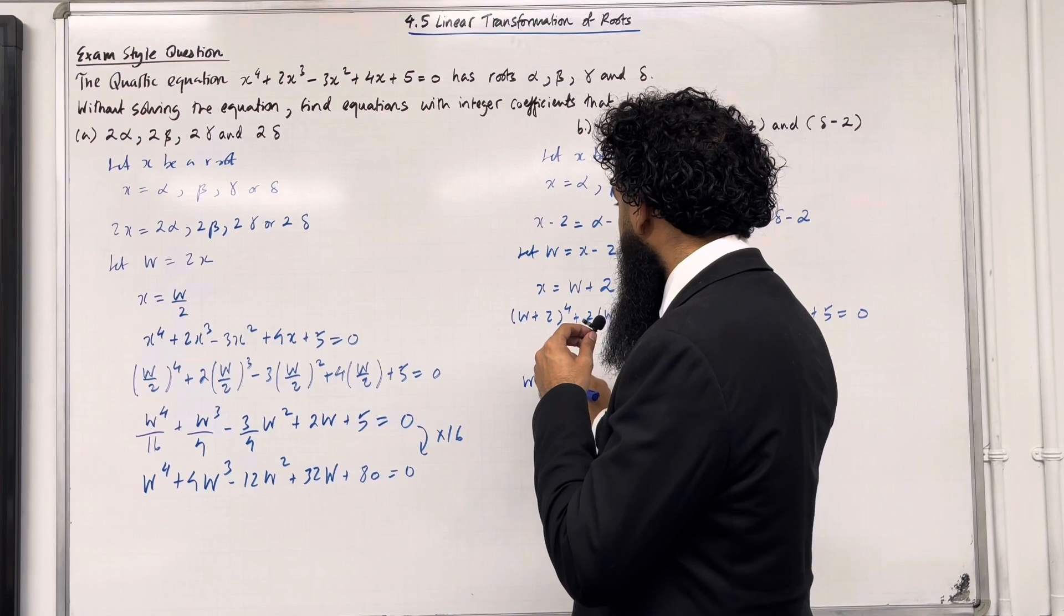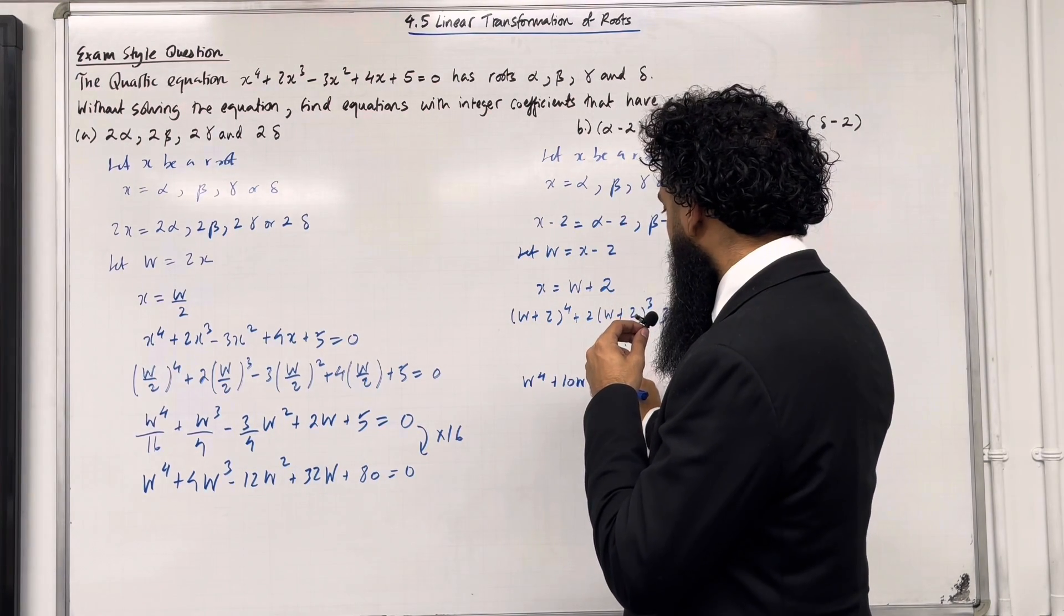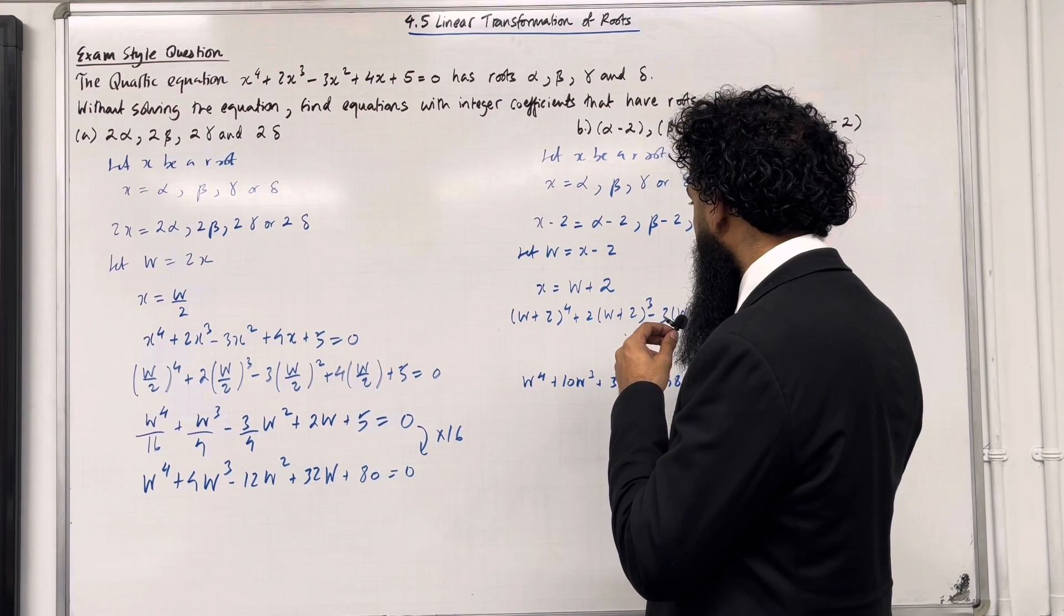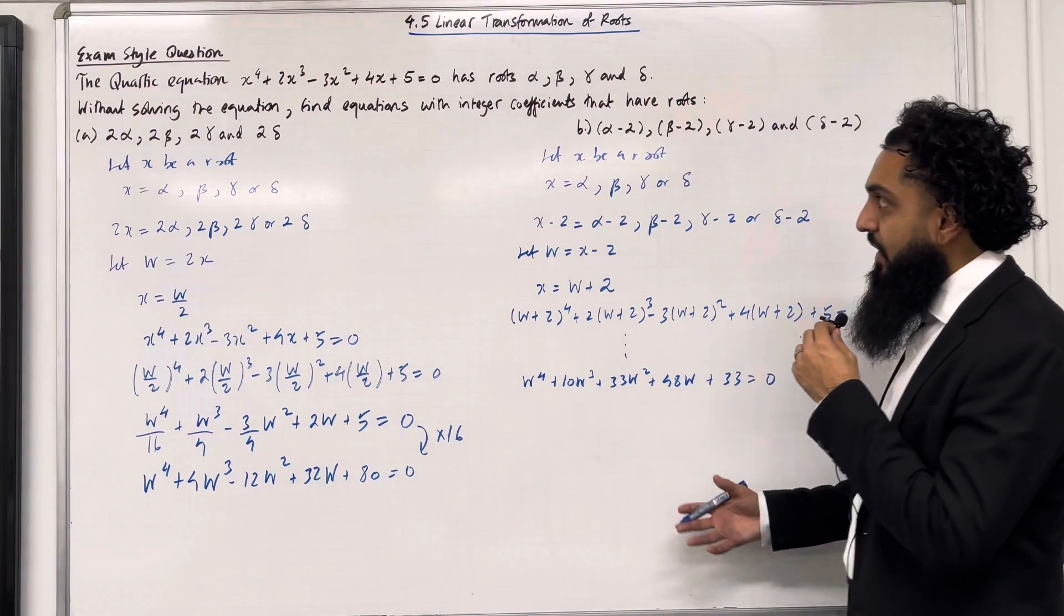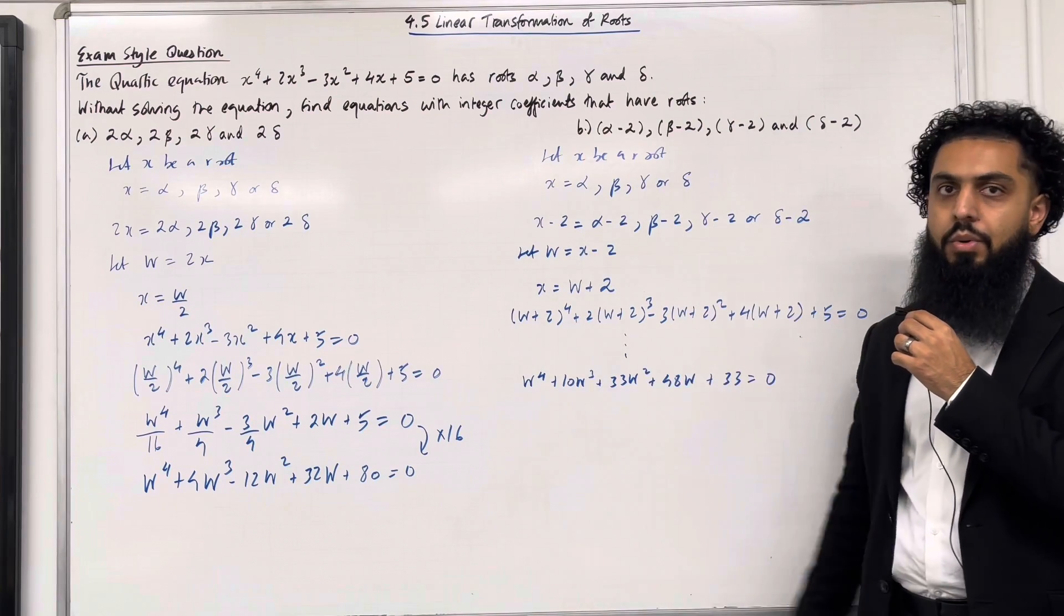W⁴ + 10W³ + 33W² + 48W + 33 = 0. And that there completes part B of the exam style question and overall this exam style question.